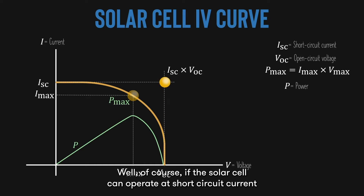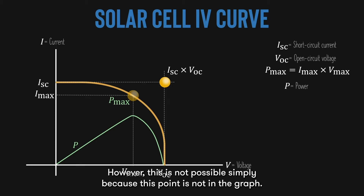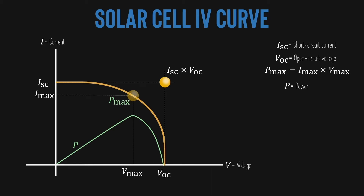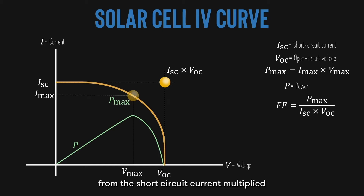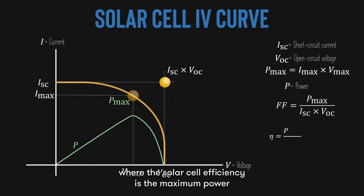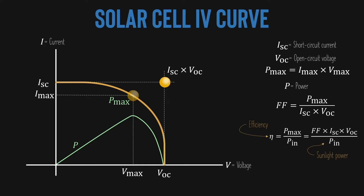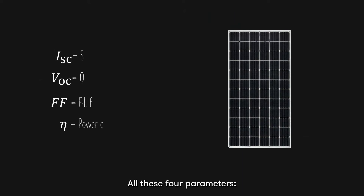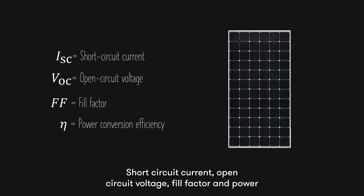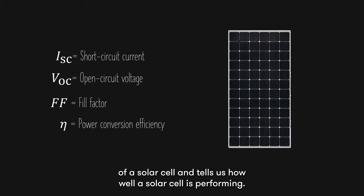Of course, if the solar cell could operate at short-circuit current and open-circuit voltage simultaneously, it would generate the highest power. However, this is not possible because that point is not on the graph. The fraction of the maximum operating power to the product of short-circuit current and open-circuit voltage is called the fill factor. From the maximum power of the solar cell, we can then determine its efficiency, where solar cell efficiency is the maximum power divided by the power of sunlight shining on the solar cell. All four parameters — short-circuit current, open-circuit voltage, fill factor, and power conversion efficiency — are standards used to define the characteristics of a solar cell and tell us how well it is performing.